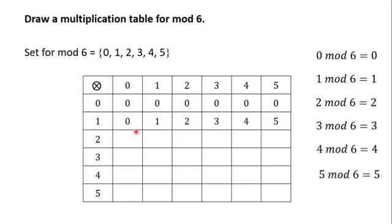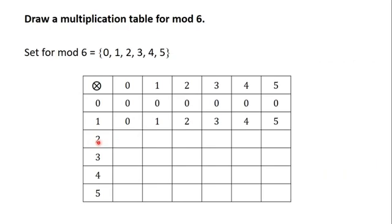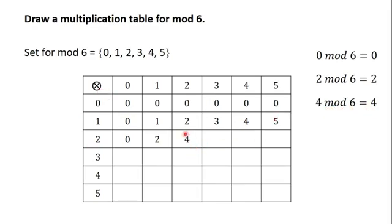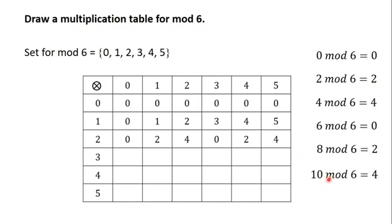Let's move on to the next row. 2 times 0 is 0; 0 mod 6 is 0. 2 times 1 is 2; 2 mod 6 is 2. 2 times 2 is 4; 4 mod 6 is 4. 2 times 3 is 6; 6 mod 6 is 0. 2 times 4 is 8; 8 mod 6 is 2. 2 times 5 is 10; 10 mod 6 is 4.